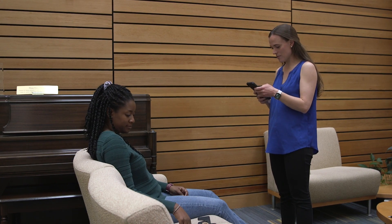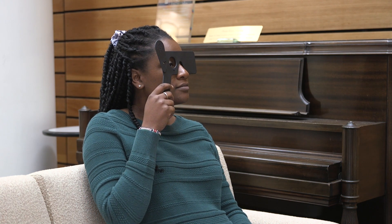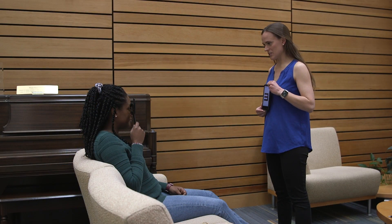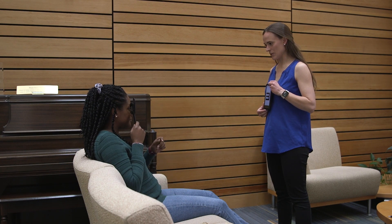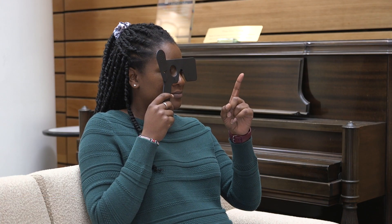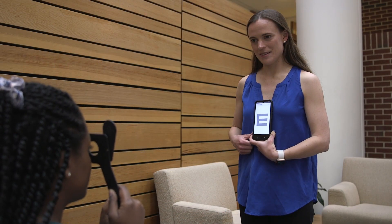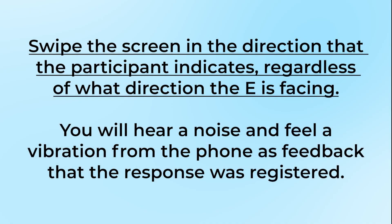Start by screening their right eye. Ask the participant to cover their left eye with the black occluder, making sure that they are looking through the large circle with their right eye. Using both hands, hold the phone vertically in front of you at the participant's approximate eye level. Instruct the participant to point which direction the E is facing. Swipe the screen in the direction that the participant indicates, regardless of what direction the E is facing.